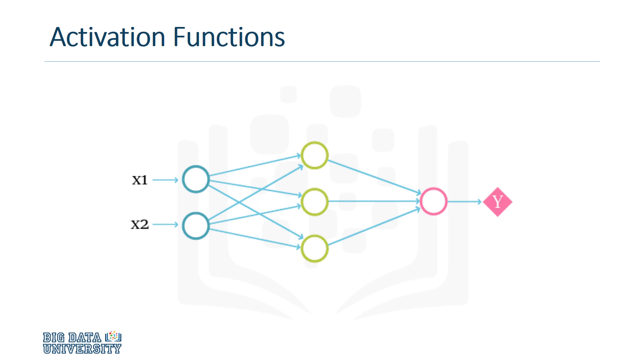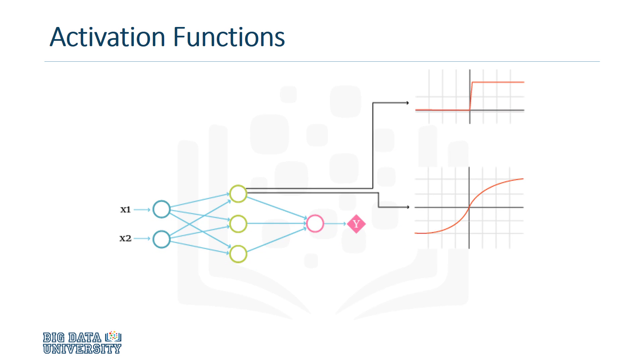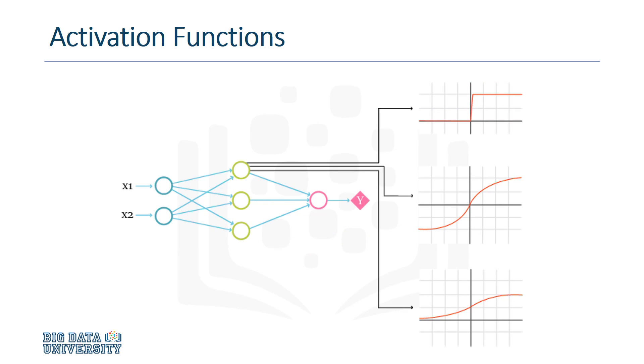Each node, or neuron as it's called, processes input using an activation function. There are many different functions, like the binary step, the hyperbolic tangent, and the logistic function. The choice of activation function has a big impact on the network's behavior.